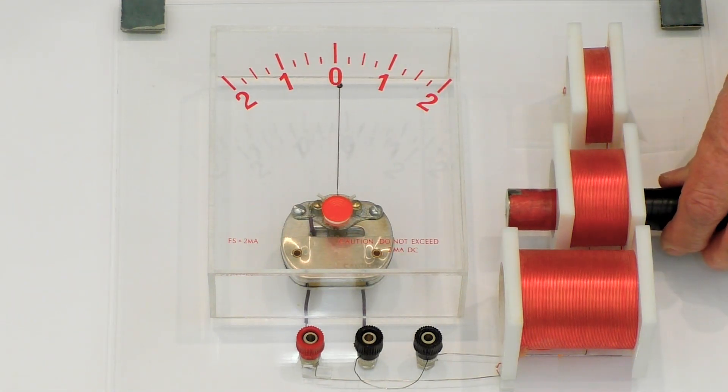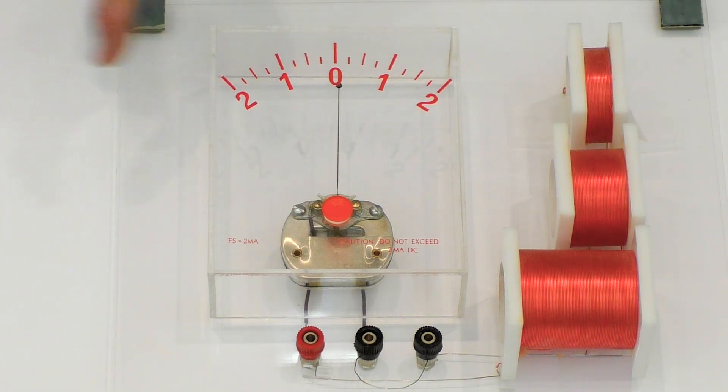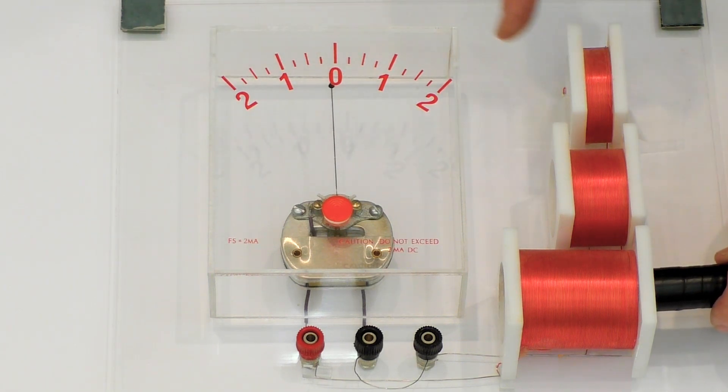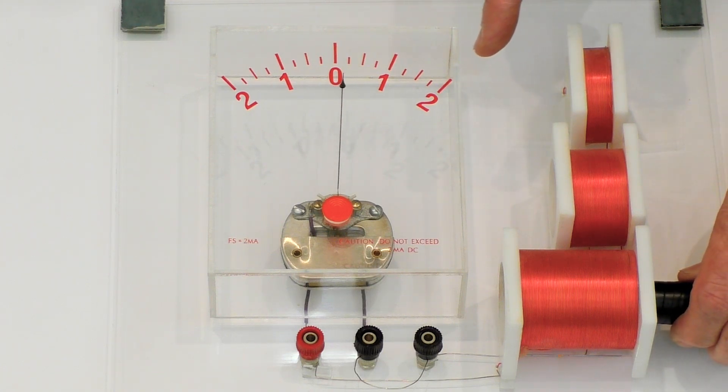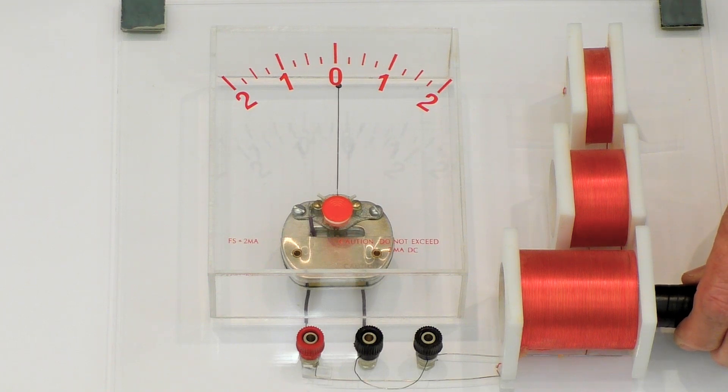So we definitely saw a bigger current, went all the way to the maximum and minimum. And then I think we actually pegged out here. It went beyond the maximum this galvanometer will measure.